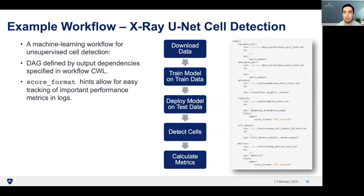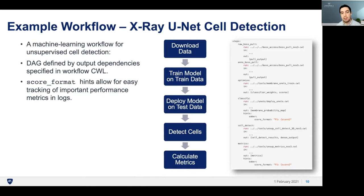Looking at a workflow itself, we have the x-ray UNet cell detection workflow. Essentially what this does is download x-ray microtomography data and then train a UNet computer vision model to detect the cells. The output is a binary mask of detected cells in the data, as well as performance metrics such as accuracy and recall. The dependencies of each step are used to construct the DAG — the directed acyclic graph — which is what Apache Airflow uses to coordinate the order in which steps are executed. We also allow users to provide a score format hint in each step for any metrics they want to capture in the tool output, such as accuracy or precision.